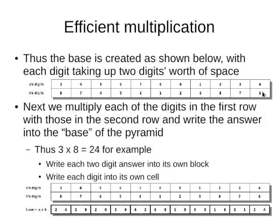And then we start by constructing the pyramid. This is the base of the pyramid, and the base contains the product of those two numbers. The first block in the base contains three times eight, and it's twenty-four. We write it out so that each digit is in its place. Four times seven is twenty-eight. Five times four is twenty, and so on. That's how we construct the base of this pyramid.